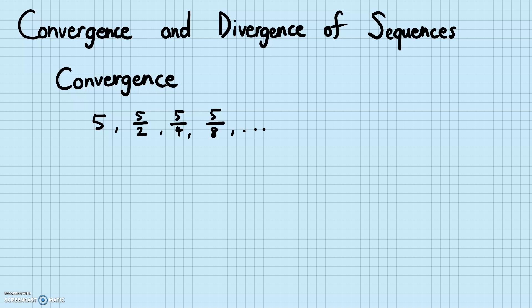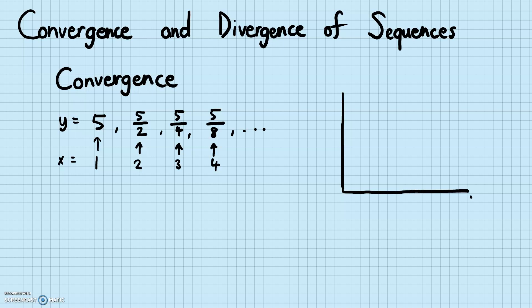If you graph this, let's call this part the y-axis and this part the x-axis. So x is going to be which number term it is. The first term is five, the second term is five-halves, the third term is five-fourths, the fourth term is five-eighths. Let's try and graph this roughly on a coordinate plane — this is the x part, this is the y part.